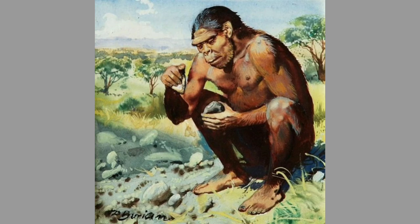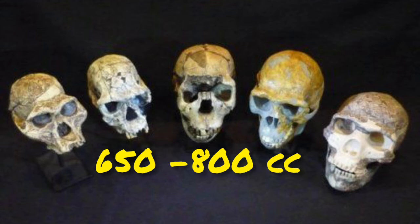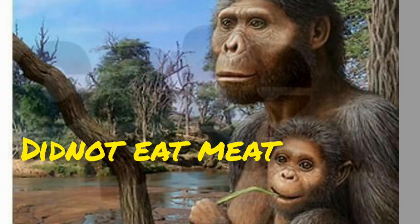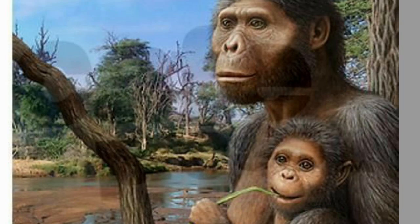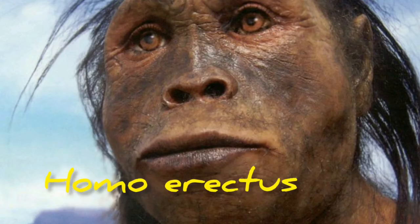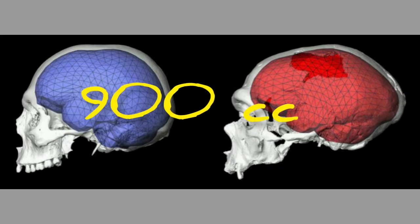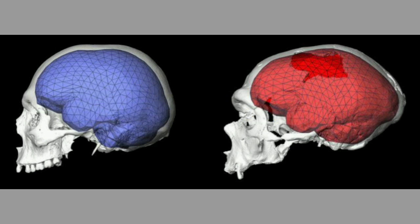Next comes Homo habilis. One very important point is that they were the first hominid — that is, human-like being. Their brain capacity was 650 to 800 cc, and importantly, they did not eat meat. Next comes Java Man, or Homo erectus. Their brain capacity was 900 cc, increasing from previous ancestors, and they probably ate meat.